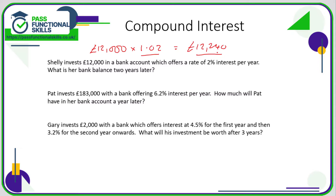Now in the second year — this is what I mean by compound interest — the interest will not be £240. It will be more than £240 because it will be 2% of £12,240, including 2% interest on the interest. Interest on previously earned interest — that is what compound interest is. So all we need to do is multiply £12,240 by 1.02, and we get her balance at the end of the second year.